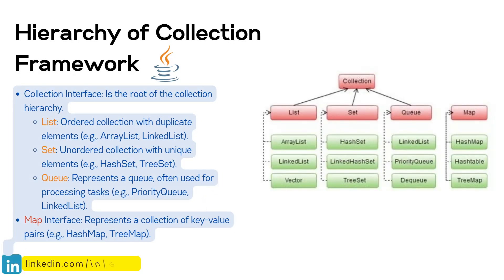Next, here is the hierarchy of the Collection Framework. The Collection interface is the root of the collection hierarchy. From this Collection interface, three other main interfaces extend: List, Set, and Queue. The Map interface does not directly inherit from the Collection interface — it is a separate interface.